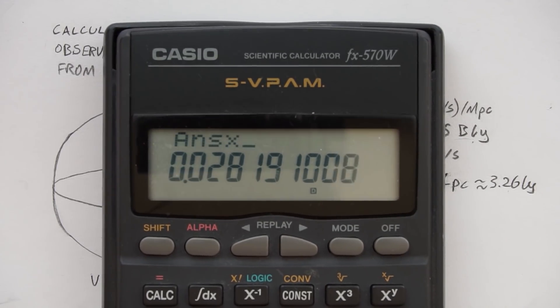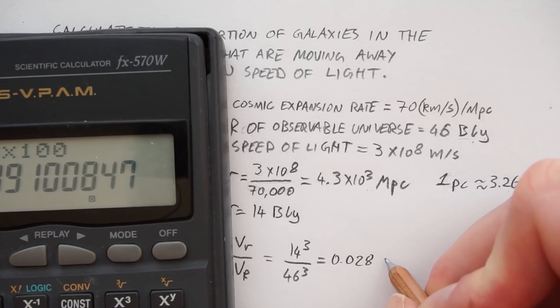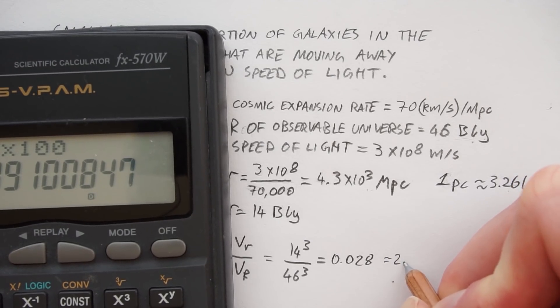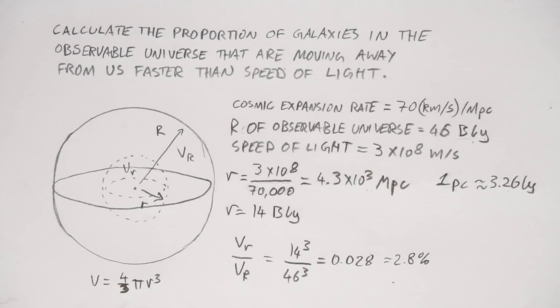So if you multiply this by 100 to turn it into a percentage, that's actually equals 2.8%. So this is telling us that 2.8% of the galaxies within is not moving away from us faster than light. So that means 100 minus 2.8, which is roughly 97%.